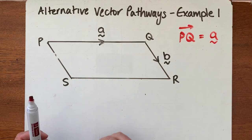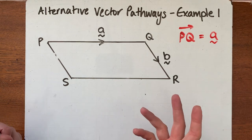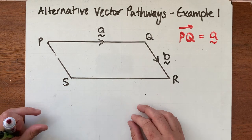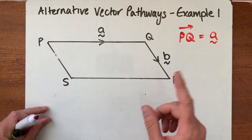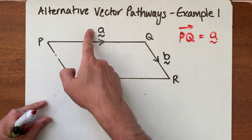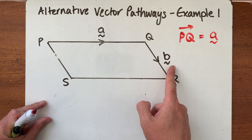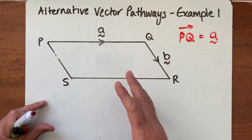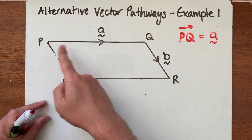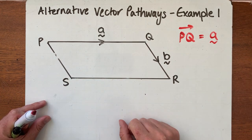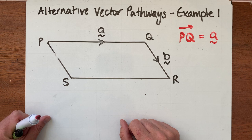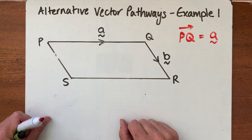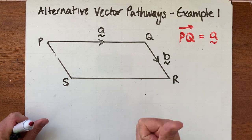With vector pathway questions, the tendency is to write the pathway using lowercase letters, but sometimes initially it's helpful to use the capital letters and the endpoints of the vector.